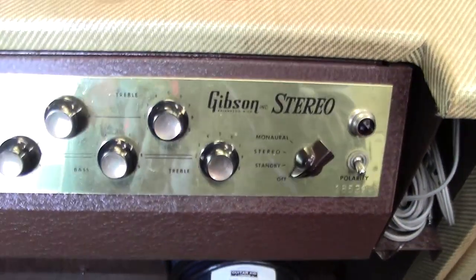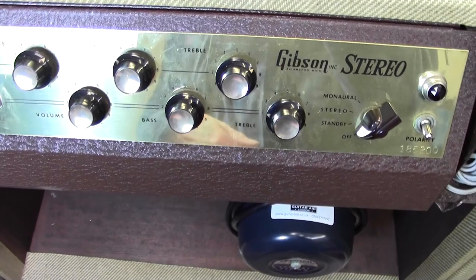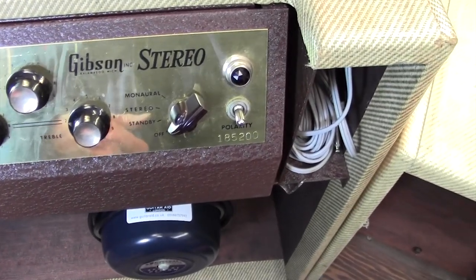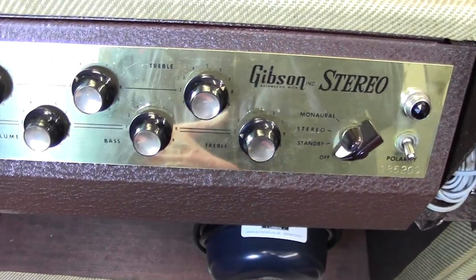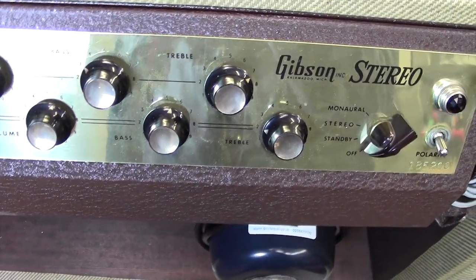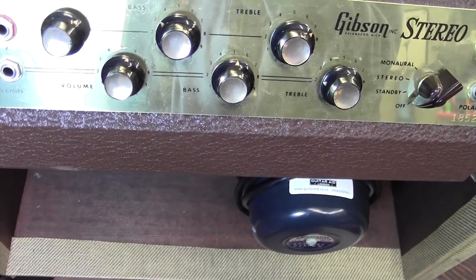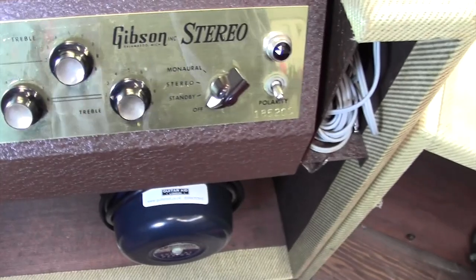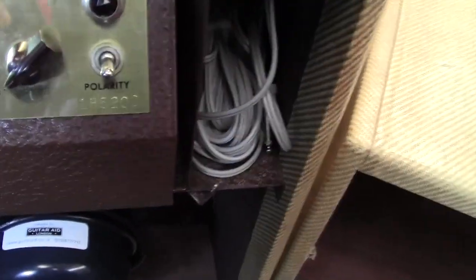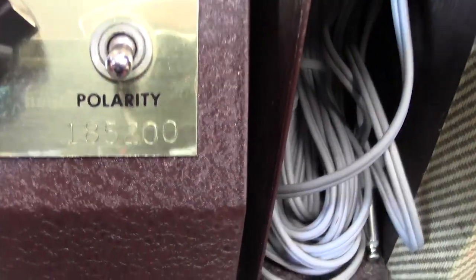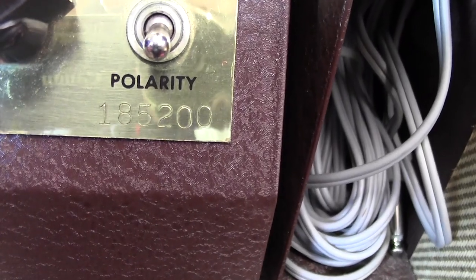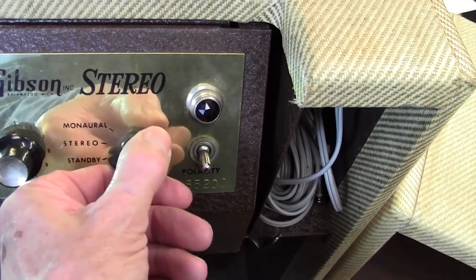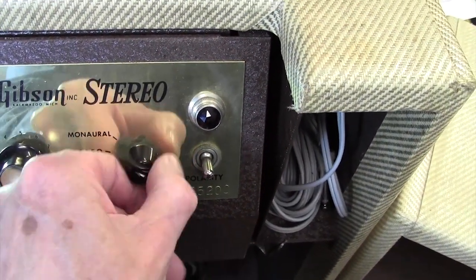Anyway, the provenance of this amp is very well known. It was bought brand new for, I think, a fairly young lad, and he's had it ever since. So these are the original knobs, but interestingly I cannot find a picture of this Gibson with those knobs on. All the others have chicken head knobs. I'm not sure what's gone on there. It is serial number 18-5-200. We've got all this gubbins here, standby switch, stereo or mono.